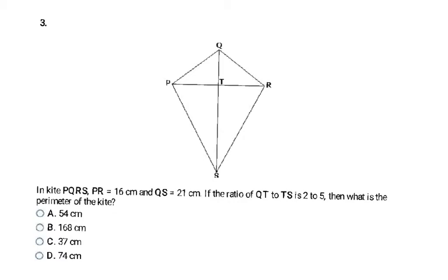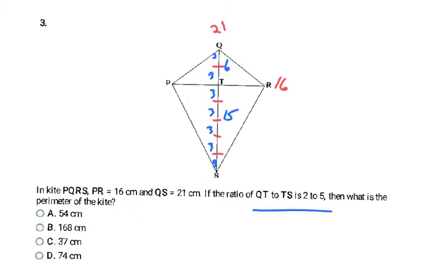This next problem involves a kite. P to R is 16 centimeters, Q to S is 21 centimeters, and the ratio of QT to TS is 2 to 5. That ratio means breaking QS into 7 equal pieces — 2 plus 5 equals 7. Dividing 21 by 7 gives 3, so each piece is 3 centimeters. That means QT is 6 and TS is 15.